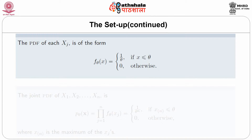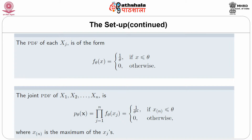For the uniform distribution, the PDF of X₁ (or X₂, ..., Xₙ) is f_θ(x) = 1/θ if x ≤ θ, and 0 otherwise. So the joint PDF of X₁, X₂, ..., Xₙ is p_θ(x) = (1/θ)ⁿ if max(X₁, X₂, ..., Xₙ) ≤ θ, since the condition X₁ ≤ θ, X₂ ≤ θ, ..., Xₙ ≤ θ is equivalent to max(X₁, ..., Xₙ) ≤ θ.